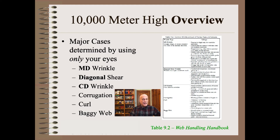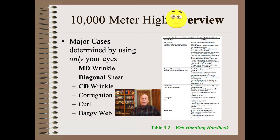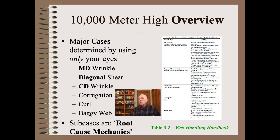Let's look at the entire wrinkling and flatness set of issues from the executive 10,000-meter-high overview. There are six major classes of wrinkling, each of which can be diagnosed at a glance using only your eyes. Major cases are the left-hand column of the chart from our must-have Web Handling Handbook. The first three major cases are merely the orientation of the wrinkle, and anyone from operator to plant manager should be able to do this given only a short amount of training. Note that perhaps 99% of all wrinkling and flatness problems fall into one of these six major classes. There are several sub-cases under each major case, given in the right-hand column from Table 9.2 of our must-have 750-page Web Handling Handbook.